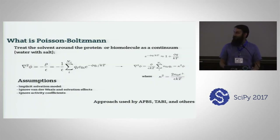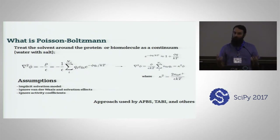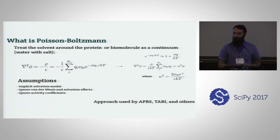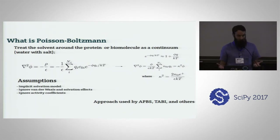So what is Poisson-Boltzmann? It's this equation — it's nonlinear, you can see the Boltzmann distribution in there. But if we assume that the salt in the surrounding solvent is evenly distributed and not too dense, we can make some reasonable assumptions and linearize it. On top of that, we are also ignoring van der Waals and solvation effects, and ignoring activity coefficients. This is a reasonable assumption when the salt is not too dense.